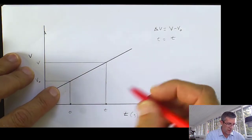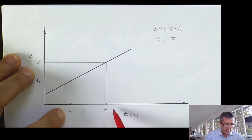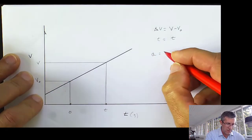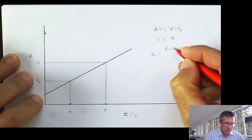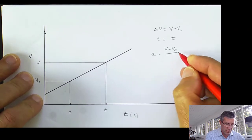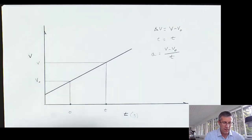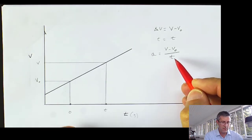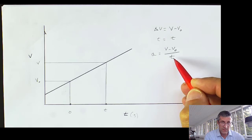So the slope of this line is going to give me acceleration. My slope, my line is going to be rise over run. So my acceleration is going to be my rise, my V minus V₀, so how much should I go up over my run, which is time. And I can rearrange this.